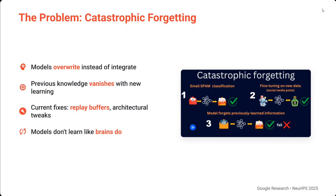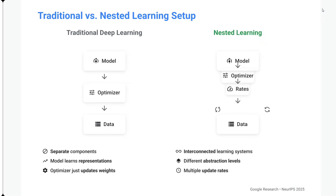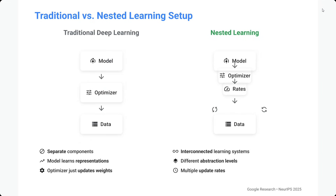The problem of catastrophic forgetting is that the model overrides instead of integrating information — previous knowledge vanishes with new learning. Current fixes include replay buffers and architectural tweaks used in reinforcement learning, but they are just fixes. Models don't learn like brains do. As humans, when we get new information we integrate it with previous knowledge, but machine learning models don't — they start forgetting.